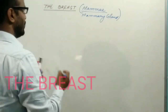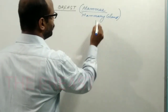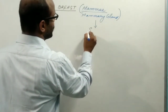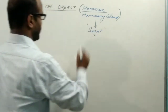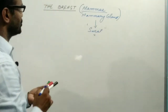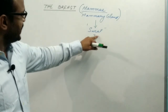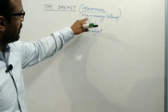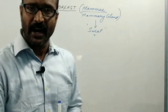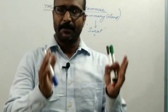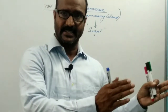The mammary gland is the modification of the sweat gland. The sweat gland is a sweat-secreting gland, and the mammary gland is the milk-secreting gland.